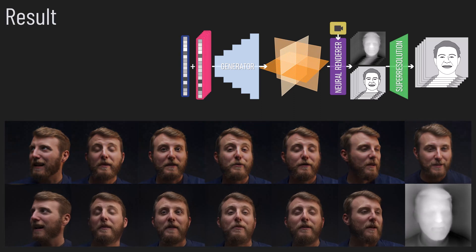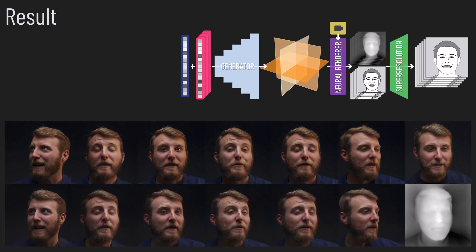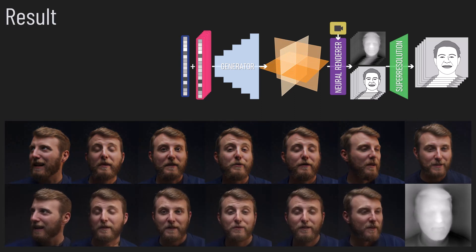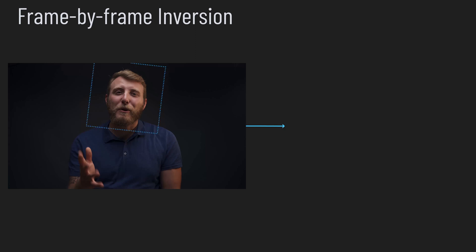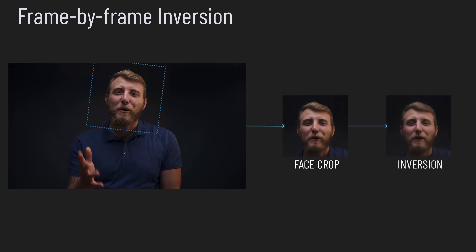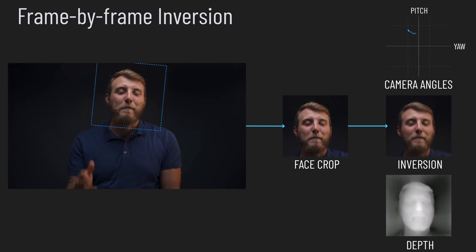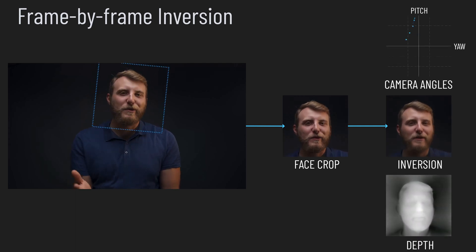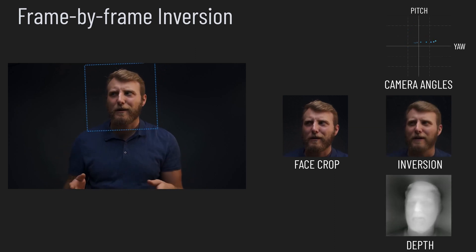We can examine our inverted person latents from arbitrary viewpoints. To edit a video, we first crop the face region from the video and invert it using our generator. During this process, we also recover the camera pose. We repeat this for all video frames, yielding a stack of latent offsets and camera poses.